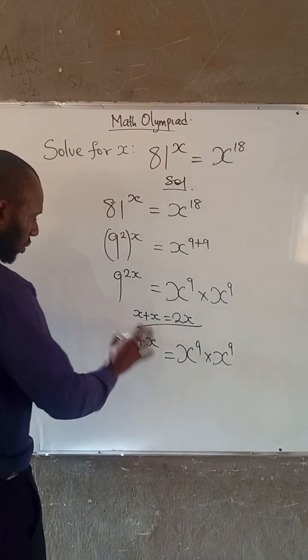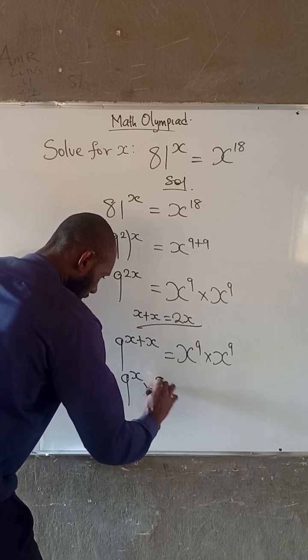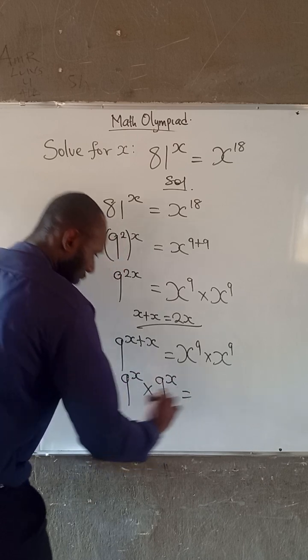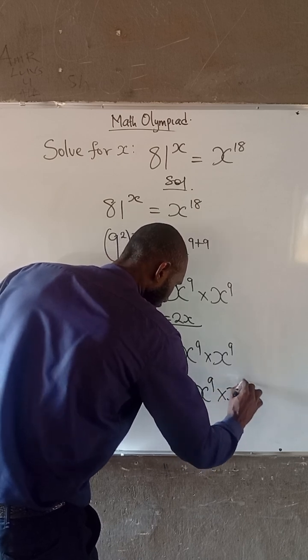Also, from laws of indices here, this becomes 9^x times 9^x equals x^9 times x^9.